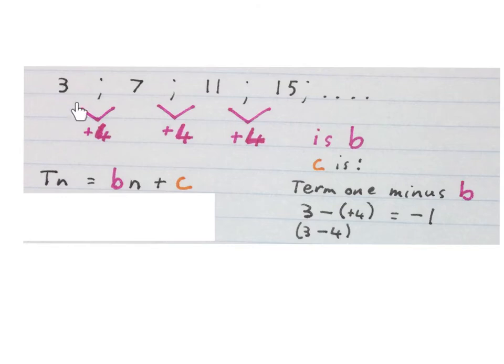So term 1 is 3 minus 4. 3 minus plus 4 is minus 1. The general term is Tn = 4n - 1.